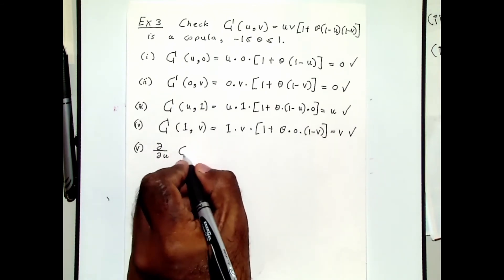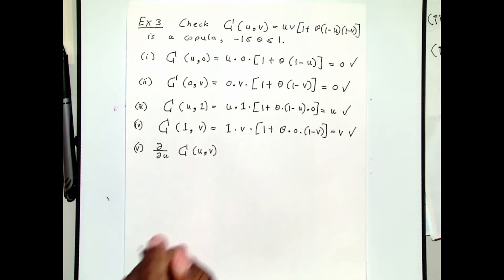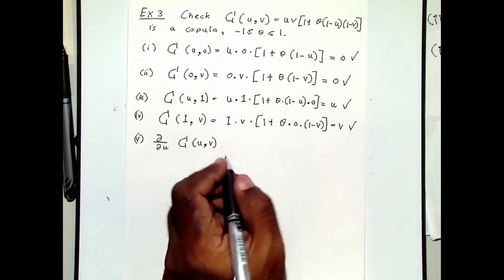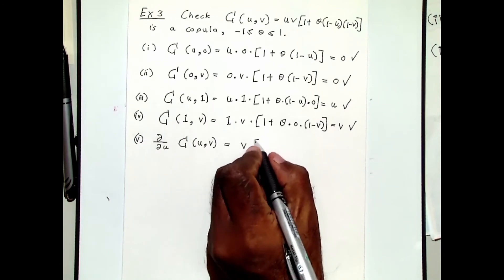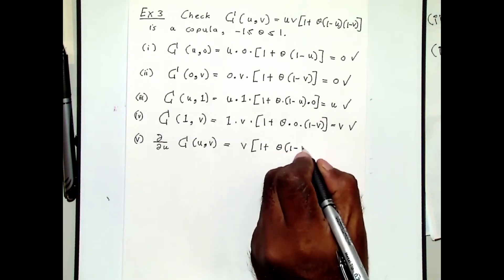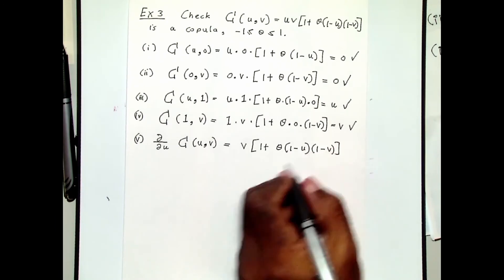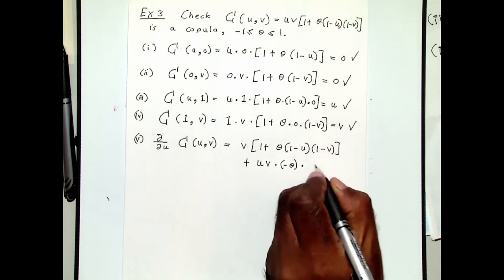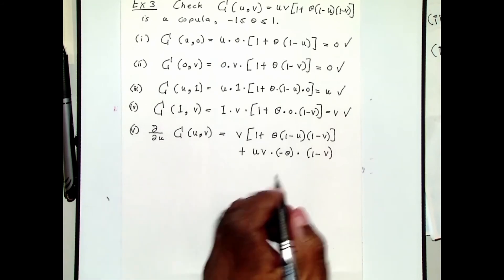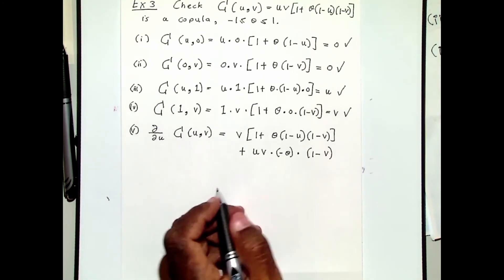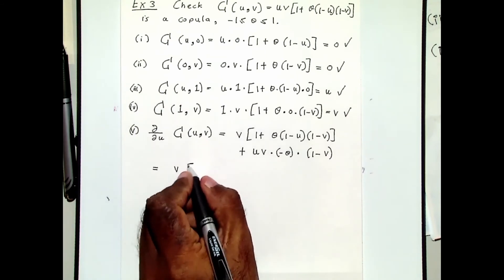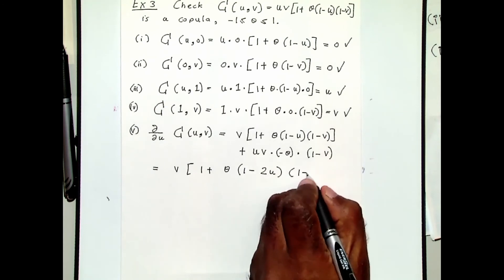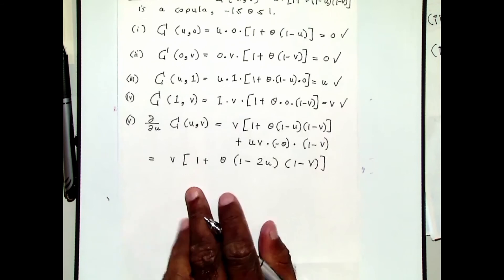Now let's look at condition five, which is the partial derivative with respect to u. You need to use the product rule to differentiate with respect to u. If you do that, you will get v multiplied by 1 plus θ times (1 − 2u) times (1 − v). We need to show that this expression is non-negative.